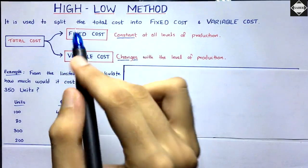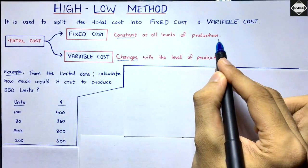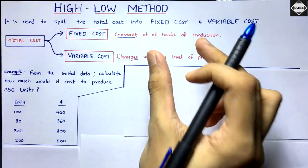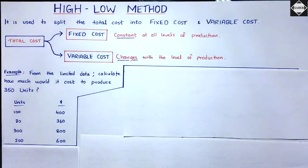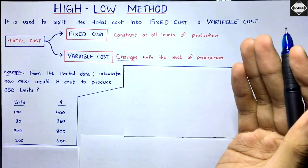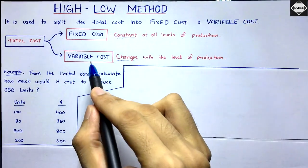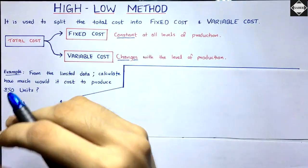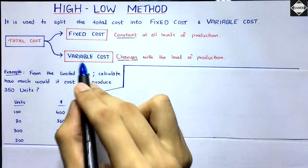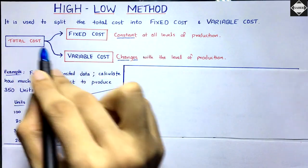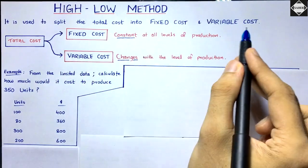Fixed cost is the cost that is constant at all levels of production — for example, the rent of a factory. No matter how much you produce, the rent always remains the same. Variable cost is the cost that changes with the level of production — for example, the cost of material. If you produce more, cost of material is high; if you produce less, it is less. So with the High-Low Method, we split the total cost into fixed and variable cost.